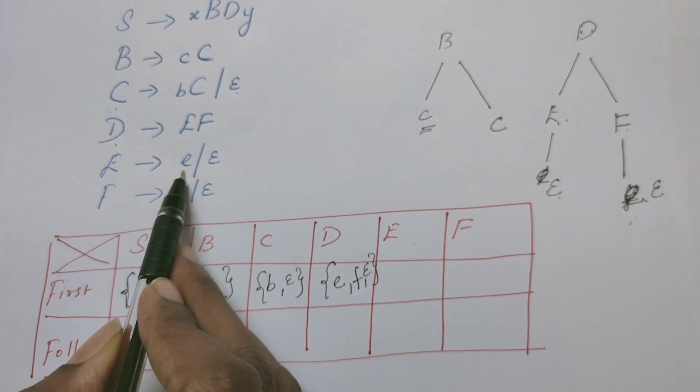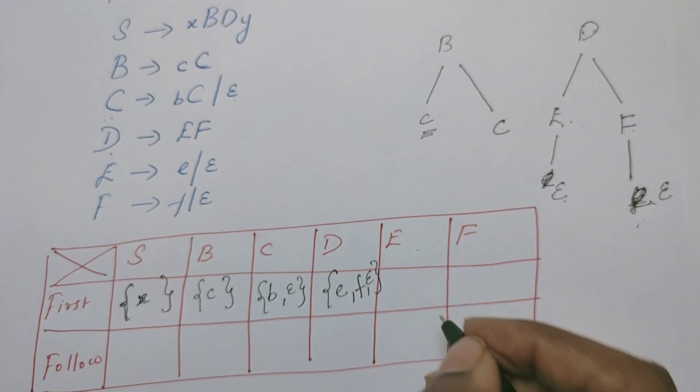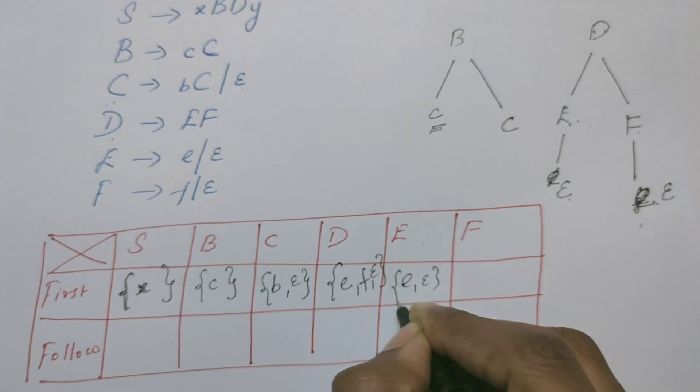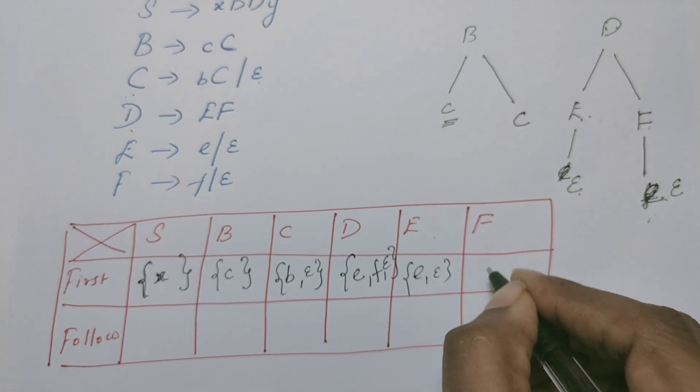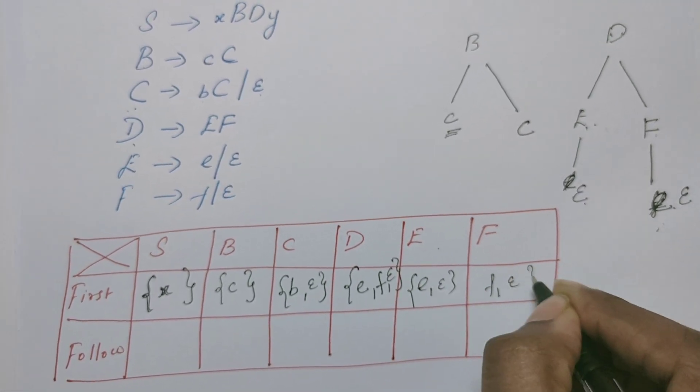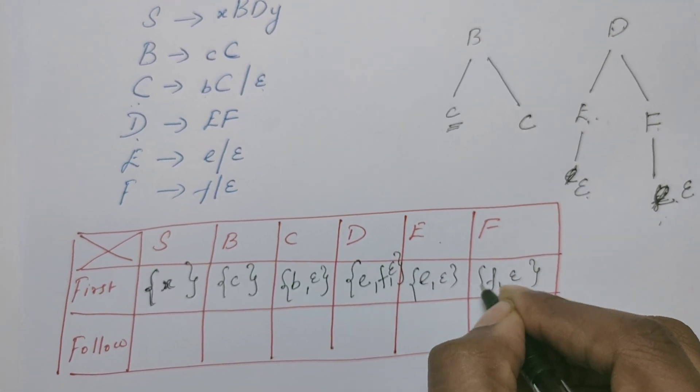So FIRST of E is {E, epsilon} and FIRST of F is {F, epsilon}. We have now computed the FIRST set for all the variables.